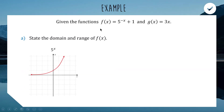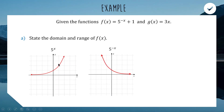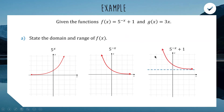Starting with 5 to the power of x — the shape is similar to 2 to the x but steeper, though not drawn to scale. Both pass through 1 on the y-axis because 5 to the power of 0 is 1. Then 5 to the negative x reflects the curve across the y-axis, turning it back around. Finally, adding 1 shifts the whole shape up by 1 unit, giving us the rough shape of 5 to the negative x plus 1.